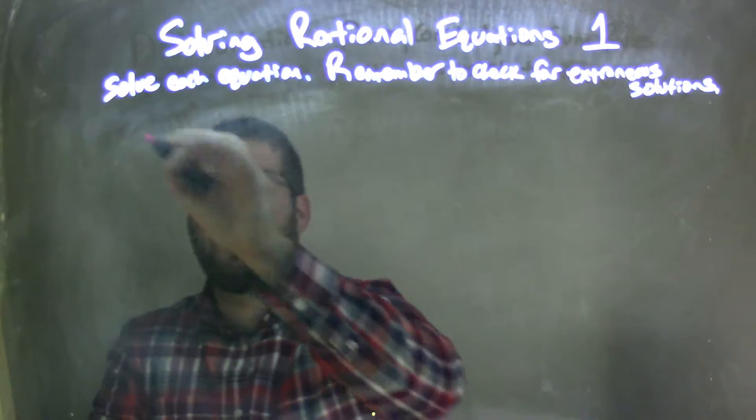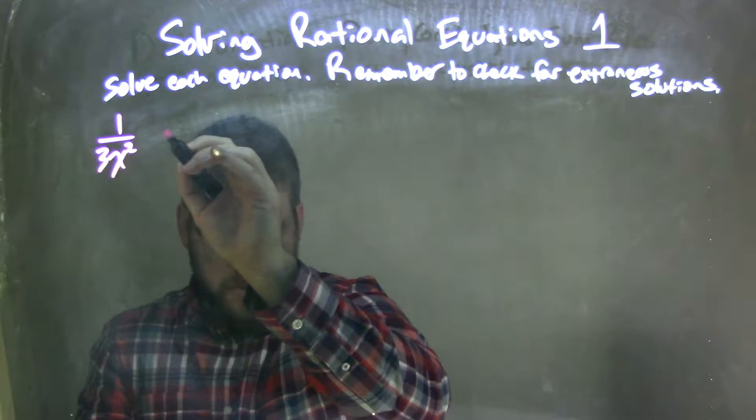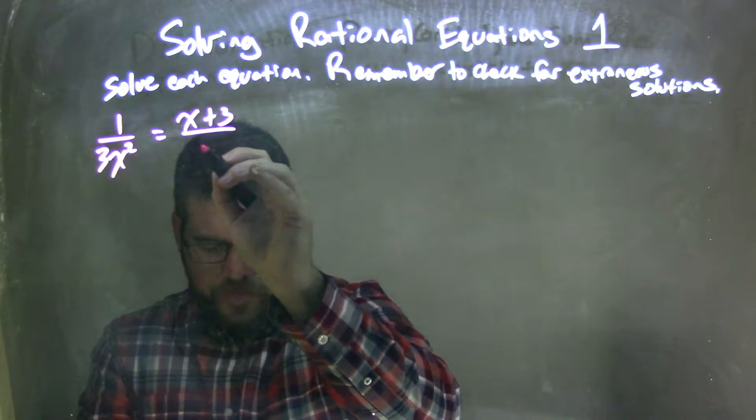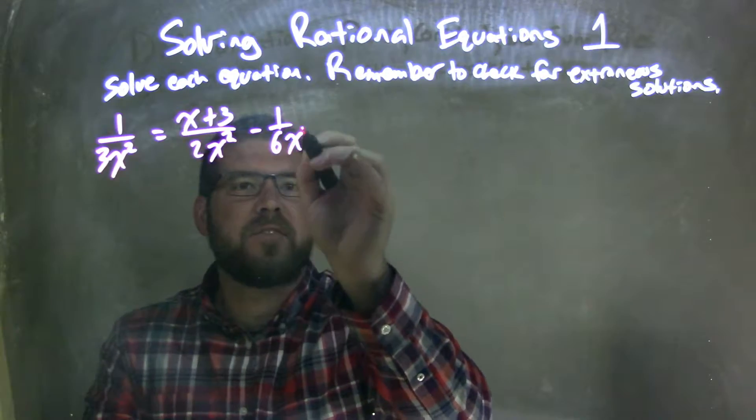So if I was given this equation: 1 over 3x squared equals x plus 3 over 2x squared minus 1 over 6x squared.